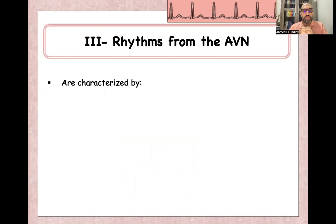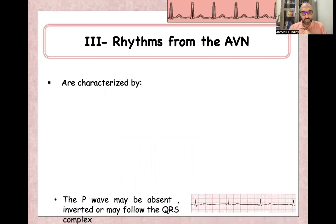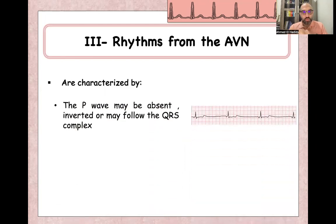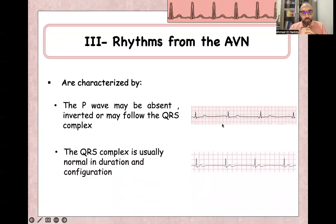Let's start with the rhythms from the AV node, which are generally characterized by the P-wave. The P-wave may be absent, inverted, or even may follow the QRS itself. As you can see here, the P-wave is inverted. Also, the QRS complex is usually normal configuration or narrow complex.